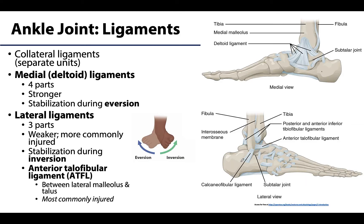Now let's talk about the ligaments associated with the ankle joint. Similar to other hinge joints, there are ligaments on the medial side and the lateral side, which are called collateral ligaments. The difference here is that the collateral ligaments of the ankle joint are not organized as one solid structure but rather an amalgamation of smaller ligaments. While supporting the hinge movements at the ankle joint, these ligaments also serve to stabilize during foot motions, particularly inversion and eversion.